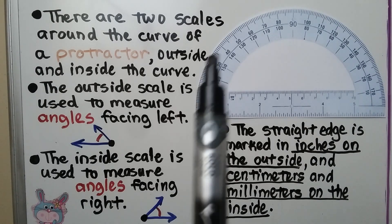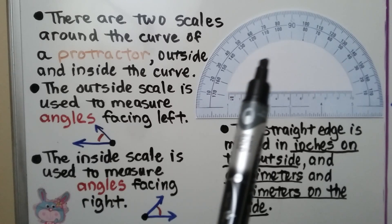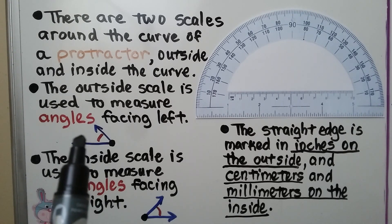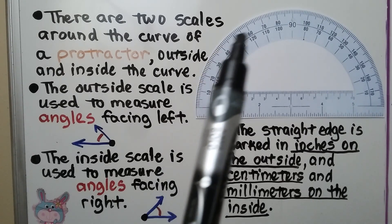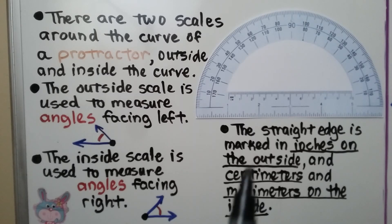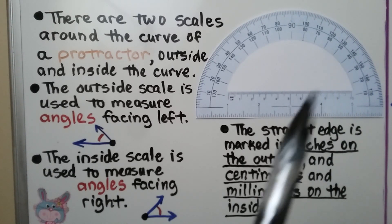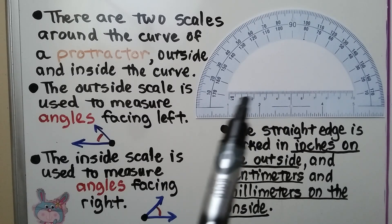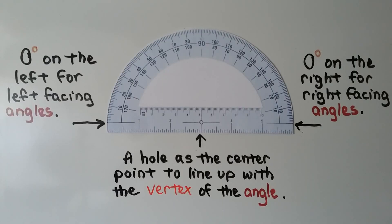There are two scales around the curve of a protractor: an outside scale and an inside scale. The outside scale is used to measure angles facing left — starting at zero, going 10, 20, 30, 40, and so on. The inside scale is used to measure angles facing to the right, starting at 10, 20, 30, 40, 50, and so on. The straight edge is marked in inches on the outside and centimeters and millimeters on the inside.